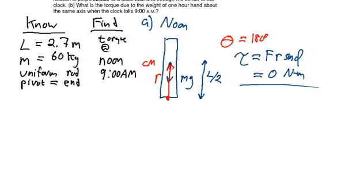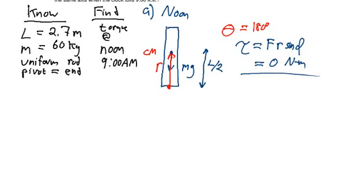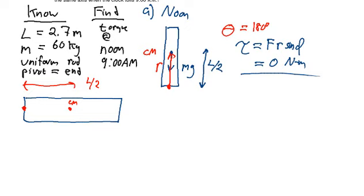If we move on to part B of the problem, then we want to orient the hour hand so it's located at nine o'clock, so we'll orient it horizontally, and I'll put the axis of rotation at the left-hand end and the center of mass at the middle, so the distance from the point of the axis to the center of mass would be equal to L over two, and again the same weight force is going to act on the hour hand, and now if I draw the vector R that goes from the axis to the point of application of the force, we see that that angle is now 90 degrees.